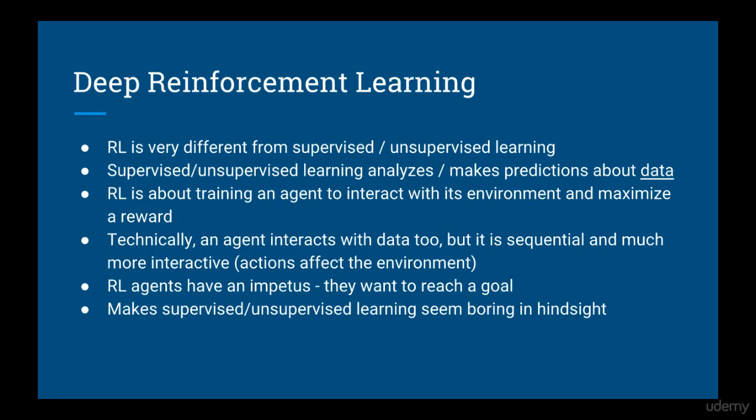We've seen that reinforcement learning is an entirely different kind of machine learning than supervised and unsupervised learning. Supervised and unsupervised learning algorithms are for analyzing and making predictions about data, whereas reinforcement learning is about training an agent to interact with an environment and maximize its reward. An agent sensing its environment is also data, but the way it interacts with it is completely different — it's temporal, meaning that the data is treated as a sequence, and it's real-time, meaning that the agent acts in a way that affects the environment, and hence it affects its next sensor readings.